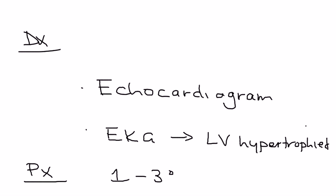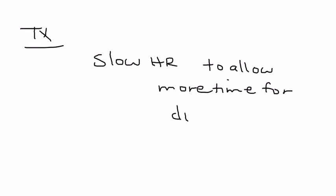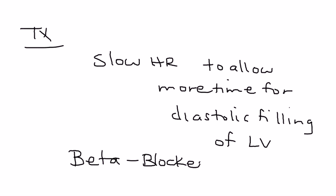Prognosis: 1-3% mortality. So although it's not a very high rate of death, the rate of death is significant enough to take this very seriously. And in terms of treatment, basically what you're trying to do is slow the heart rate to allow more time for diastolic filling. And that will, of course, allow you to have greater cardiac output. And that is accomplished with medications known as beta blockers and also calcium channel blockers.